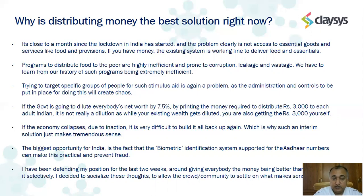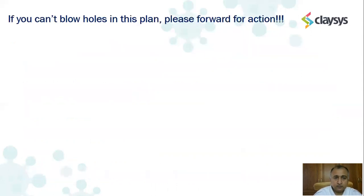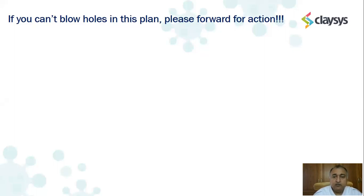The biggest opportunity for India in this crisis is the biometric identification system supported by Aadhaar numbers — it's very simple and practical to allow anybody, through multiple front-end channels, to get the 3,000 rupees, and then use it to buy whatever they want. When they use that 3,000 rupees, it helps the economy because whatever they buy will help put the economy back on track sooner. I have been defending the position of giving everybody money versus doing it selectively for the last two weeks, and have decided to socialize these thoughts to allow the crowd and community to weigh in. Time is of the essence — we can debate forever, but decisions need to be made. If you can't blow holes in this plan and you agree with it, please forward it for action.